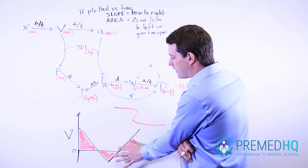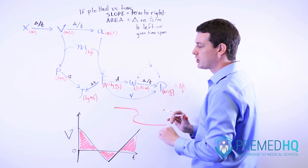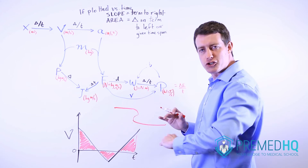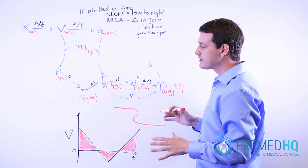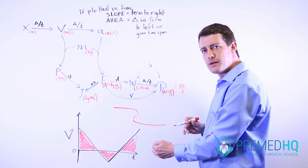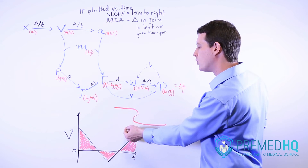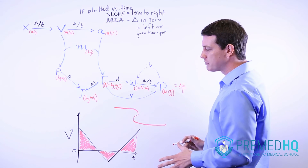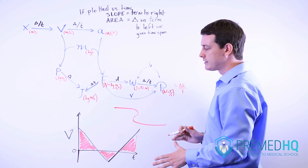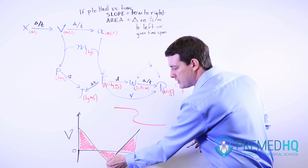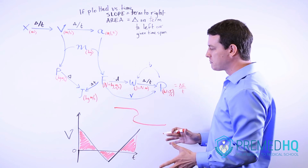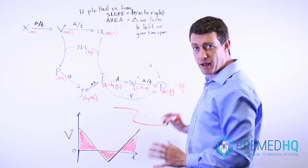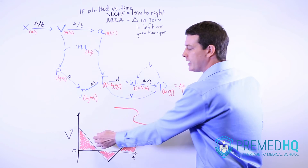Graphs like this also underscore the distinction between displacement and distance. The area under the velocity versus time curve gives the change in position over time. Distance only cares about how far the object travels, so if you're finding distance, you add the areas of all three sections — the forward movement, the backward movement, and the forward movement again.